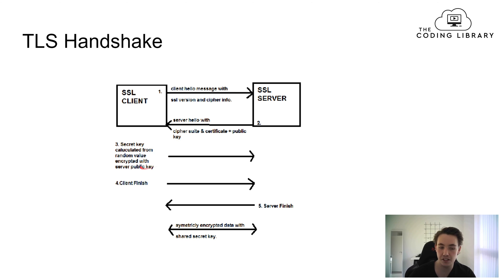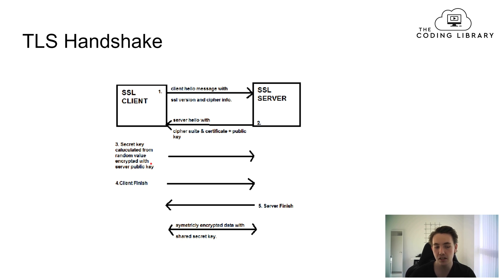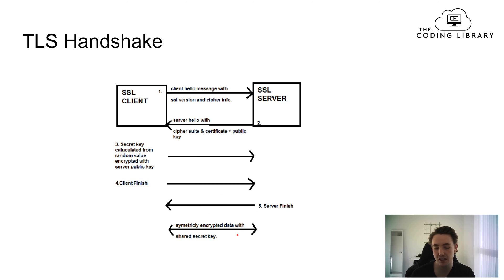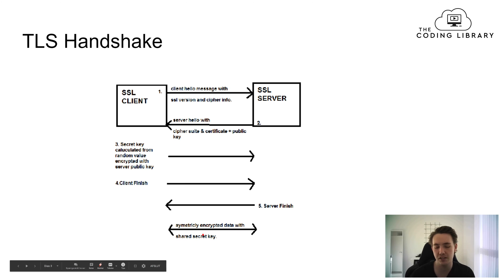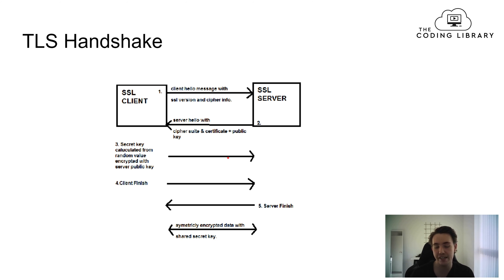The secret key is calculated from a random value encrypted with the server's public key received in the hello message. This calculated secret key is then sent to the server, and the client finishes its handshake. When the server receives this calculated secret key it sends back an acknowledgment and finishes the handshake. Now symmetric encrypted data exchange using a shared secret key can happen between the server and client, completing the TLS handshake.